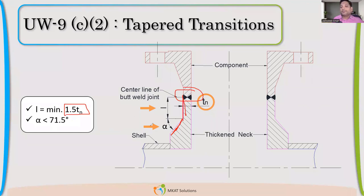And the second requirement is related to angle. Angle should be less than, here the angle is this alpha. So, it should be less than 71.5 degrees. These are the two requirements when we are having joint of nozzle neck and a flange.